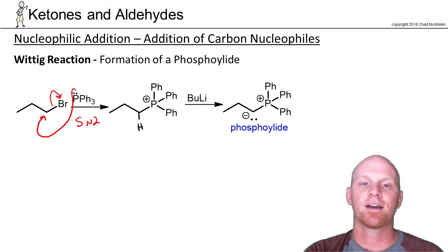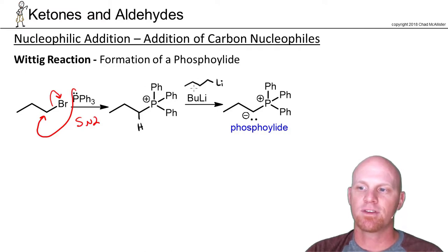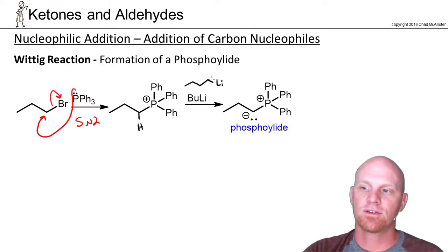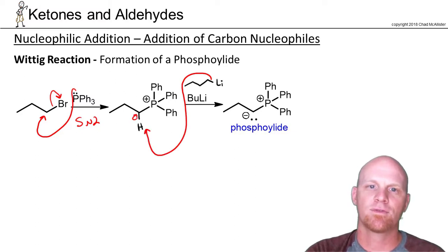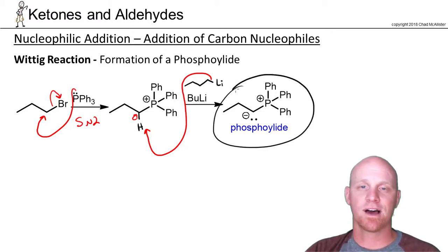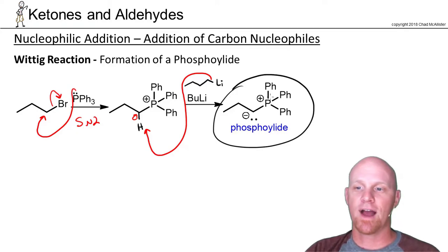Deprotonating that hydrogen isn't easy, so we use butyl lithium — an organolithium reagent that is both a strong nucleophile and a strong base. In this case it acts as a strong base, and that pair of electrons comes in and deprotonates the hydrogen. That's how we form our phospho-ylide. So the full preparation is: SN2 with triphenylphosphine, followed by deprotonation with butyl lithium — and now the phospho-ylide is ready to carry out the rest of the Wittig reaction.